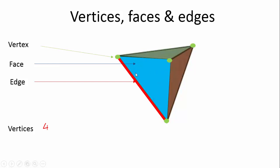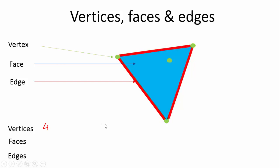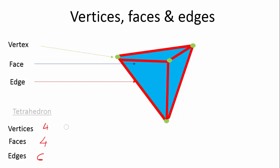There are four vertices — one, two, three, four. Then we have faces: one, two, three, and then the face at the back, so four faces. And then we have edges: one, two, three, four, five, six — so six edges. There are no edges on the back. Three faces here and one face on the back, so four faces in total.